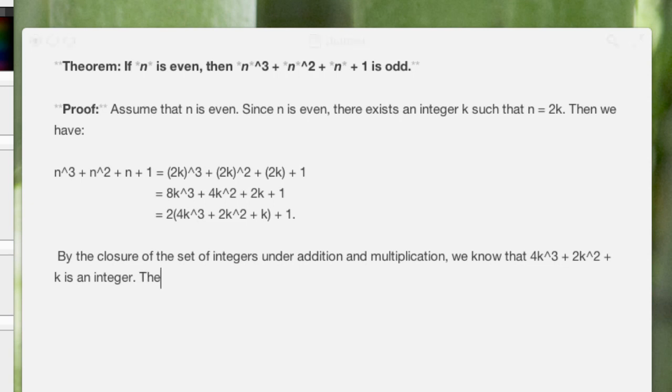All right, now let's continue. Therefore, we're starting to wind it up here, wind it down to the end. So, therefore, we know that n cubed plus n squared plus n plus 1 equals 2l plus 1 for some integer l.